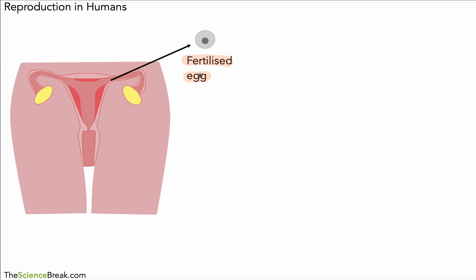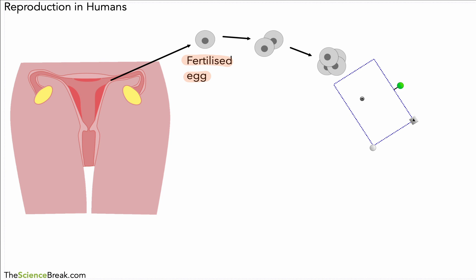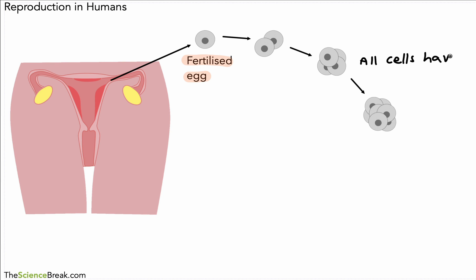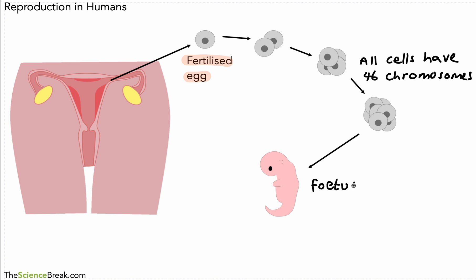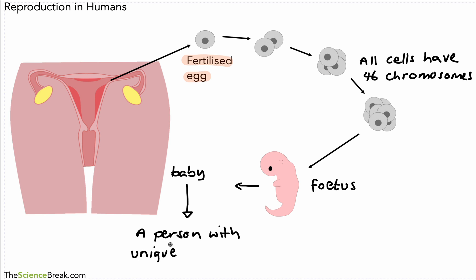Once they've joined together, the two nuclei join and we end up with a fertilized egg — here's a fertilized egg inside the oviduct of the female reproductive system. That fertilized egg will go on to become two cells, then four cells, then a little ball of cells. Importantly, all of these cells will have 46 chromosomes. This will then develop into all the specialized cells needed to make a fetus.